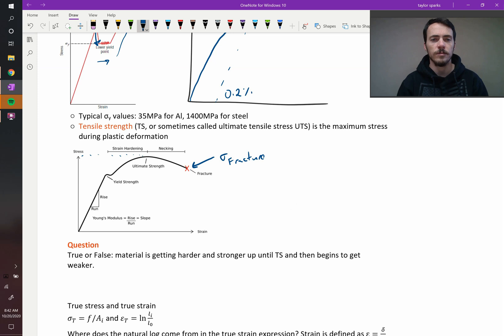Now quick question, this plot looks a little bit funny, doesn't it? It makes sense that if you apply more and more stress you get more and more strain, and so this general upward curve makes sense, but why would it ever start turning down? So true or false, the material is getting harder and stronger up until the tensile strength, TS, and then it becomes weaker, since it's going downhill, true or false?